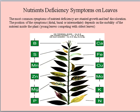Nutrients deficiency symptoms on leaves. The most common symptoms of nutrient deficiency are stunted growth and leaf discoloration. The position of the symptoms — distal, basal, or intermediate — depends on the mobility of the nutrient inside the plant.